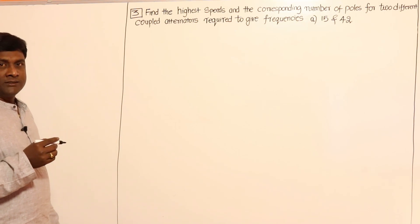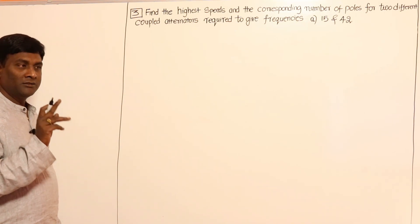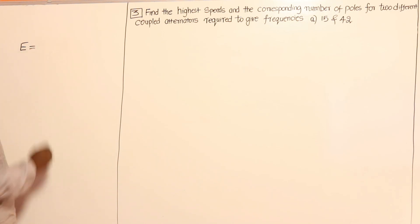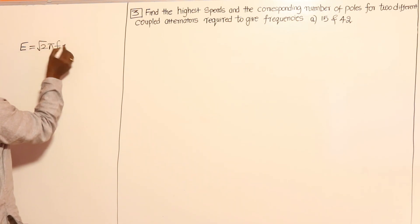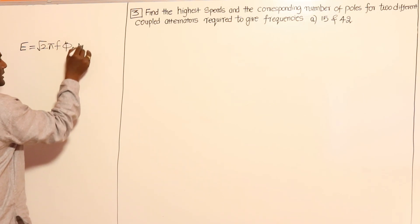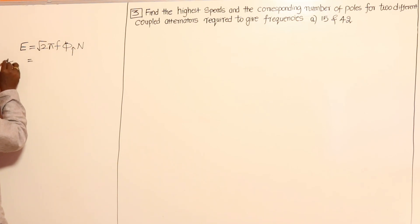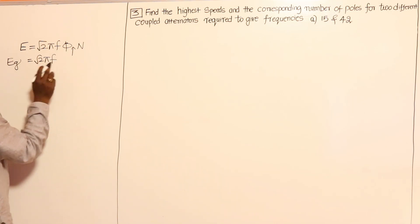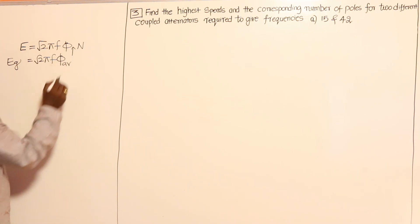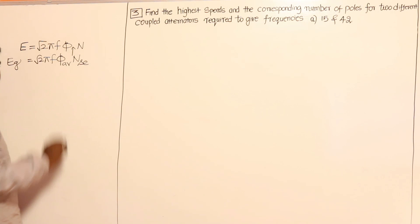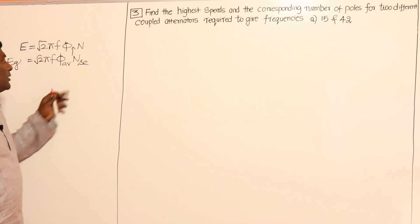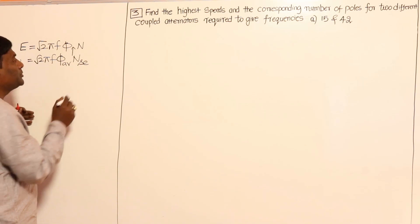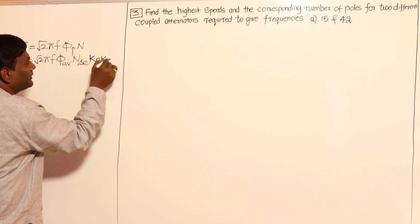For example, the transformer equation — the induced voltage equation. I don't want to specially derive the equation because it is the machine simplified. So the equation: induced voltage equal to root 2 pi f phi_max N, as in our transformer. In the case of a generator, E_g is nothing but the same root 2 pi f, but it is not phi_max — it is going to be phi_average.